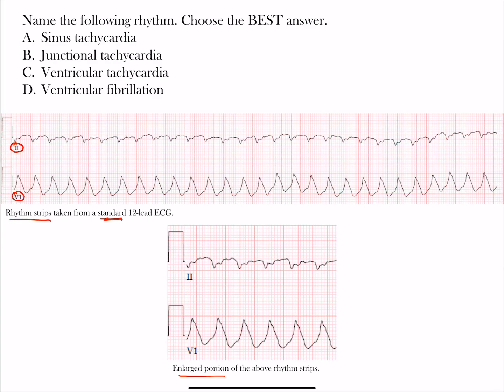Why don't you take a moment, pause the video, and then restart it when you've come up with an answer. Hopefully you've had a moment to go through it and make a choice here. Let's look at each one of these. Notice that the first three choices - sinus tachycardia, junctional tachycardia, and ventricular tachycardia - all have tachycardia.